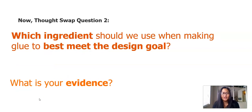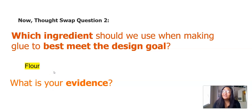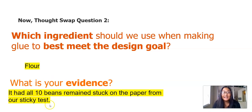Second question: which ingredient should we use when making glue to best meet the design goal? Remember, it has to be a sticky glue. What is our evidence? I said flour, and here's my evidence: all 10 beans remained stuck on the paper from our sticky test.